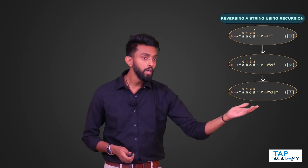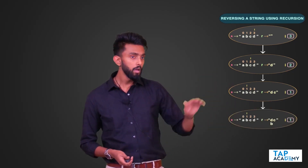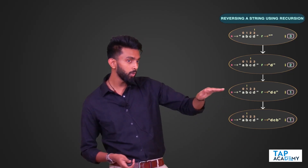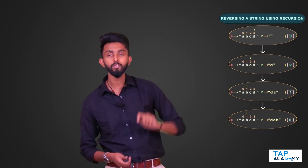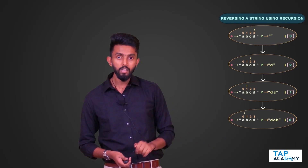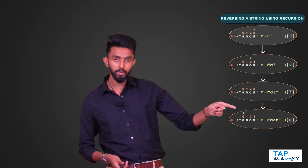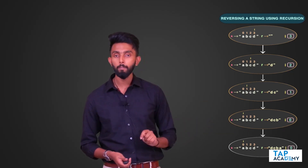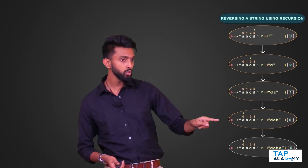I call the same function again. This time I concatenate whatever character is at the `i`th position (index 1, character B) to `R`, and reduce `i`. So `i` goes from 1 to 0. I call the function once more - `i` is now at index 0 (character A). I concatenate it to `R`, so `R` becomes 'DCBA'.